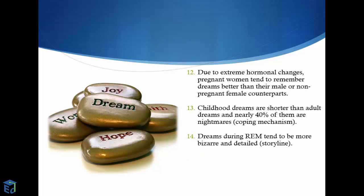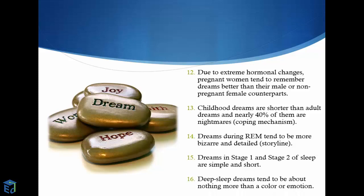Dreams during REM sleep tend to be more bizarre and detailed. They generally have a storyline, whereas dreams in stage 1 and stage 2 of sleep are simple and short and have no storyline. Deep sleep dreams tend to be about nothing more than a color or emotion.